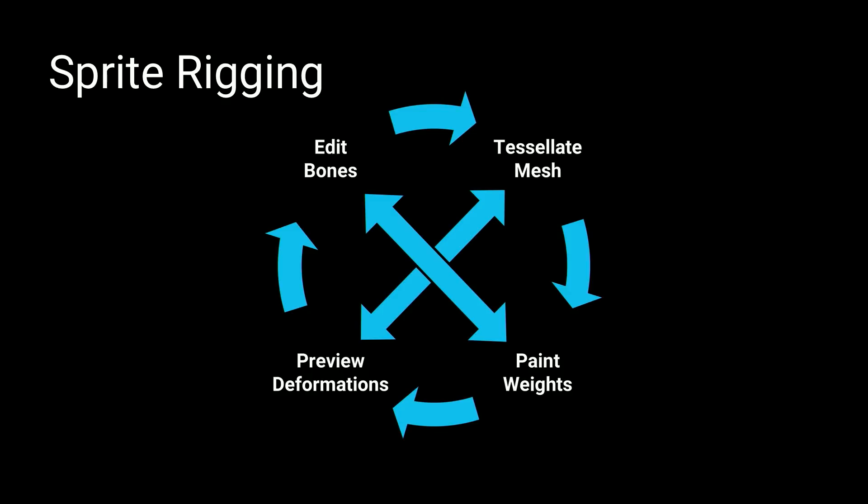Typically when you're rigging, you're thinking about this iteration loop — you want to add bones, edit them, move them around, make sure they're at the right position. You want to tessellate the mesh so that those deformation points are where they should be for your character. Then you want to paint weights and connect the bones to the mesh. Then you want to preview all of this. And you want to move between all of these processes without hitting apply all the time, which is what our first phase was — very much that modal style.